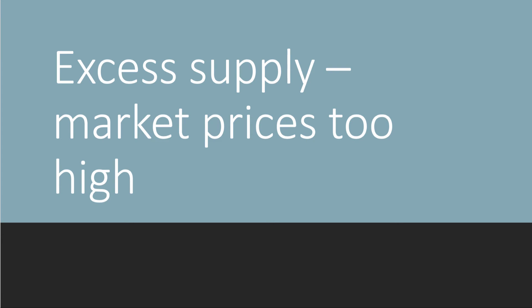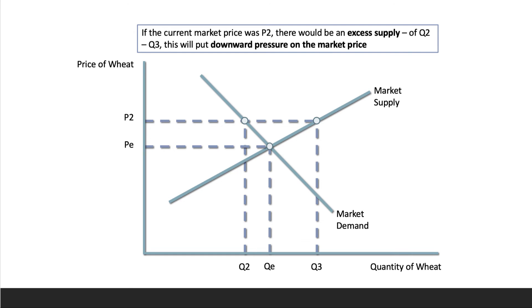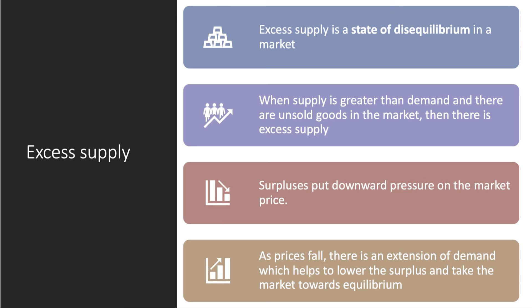In contrast, in excess supply, market prices are too high. Looking at the diagram again, the equilibrium is Pe at quantity Qe, but at price P2 there's an excess of supply over demand. Supply is Q3 but demand at the higher price is only Q2. That leads to excess supply, or surplus, and of course if there's a surplus in the market there's downward pressure on the price.